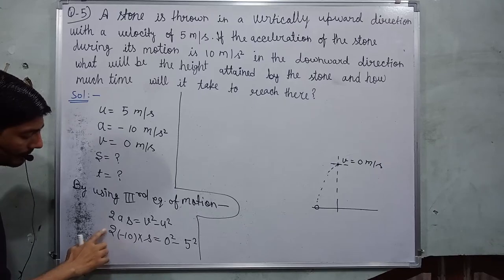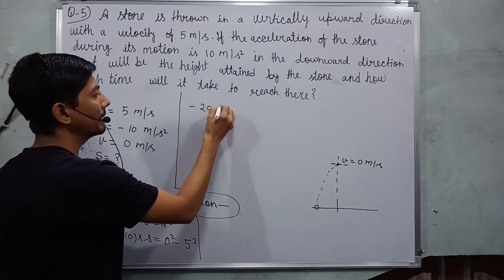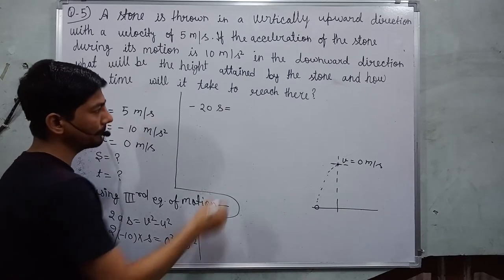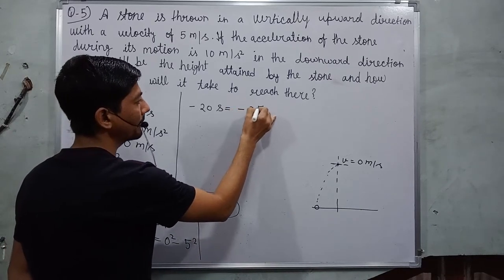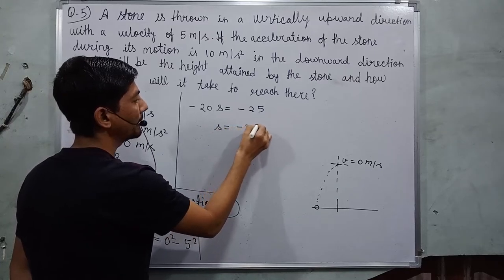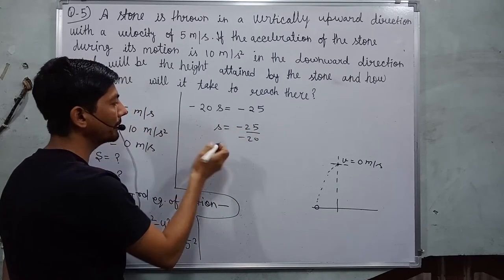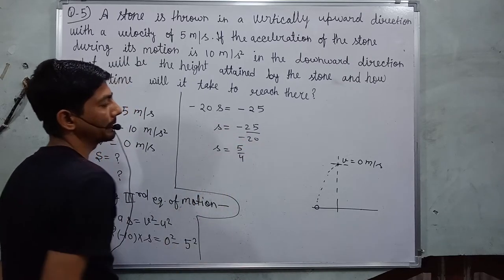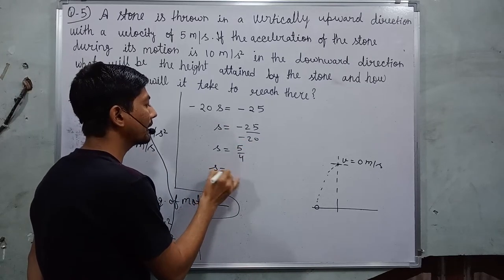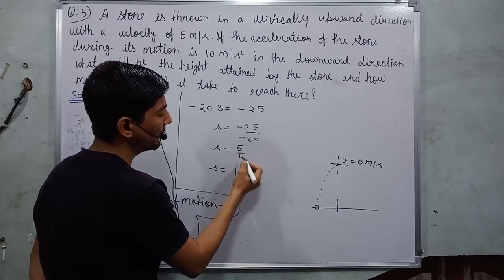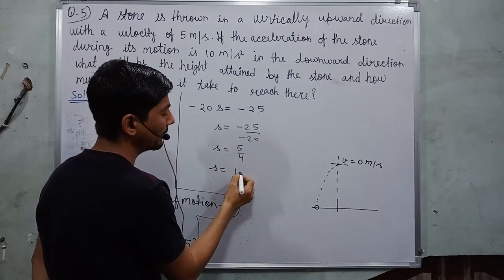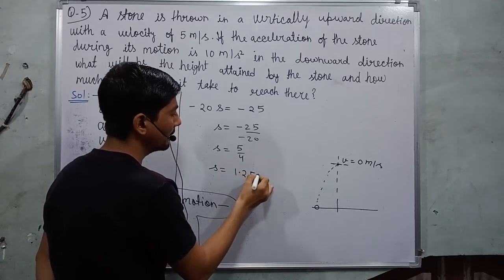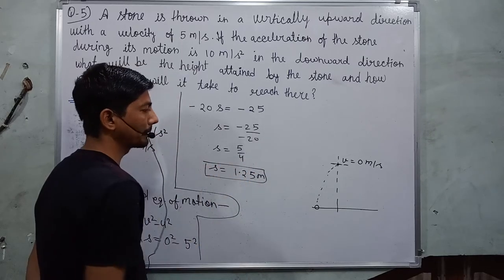So here, 2 into 10, 20 plus into minus. So there will be minus 20 s is equal to 0 square 0 and 5 square 25. So there will be minus 25 and s is equal to minus 25 over minus 20. Minus minus cancel out. So it will be 1.25 meter.